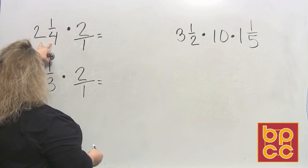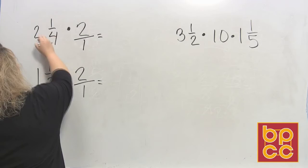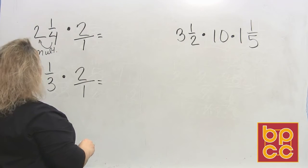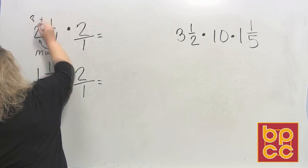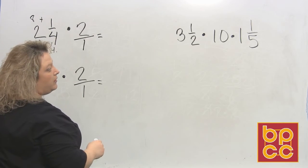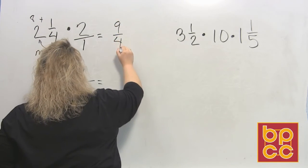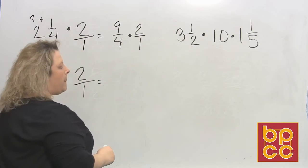So you want to do 4 times 2. Remember this is multiplication, multiply. I'm going to abbreviate that MULT. Multiply. 4 times 2 to give you 8, and 8 plus the numerator 1 gives you 9. So now you have 9/4 multiplied to 2/1. Okay.